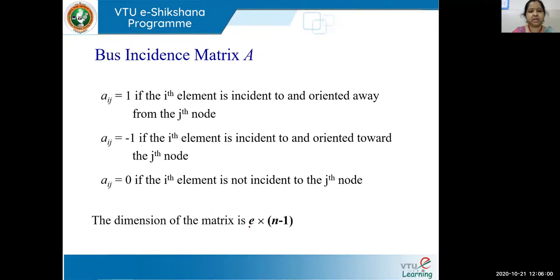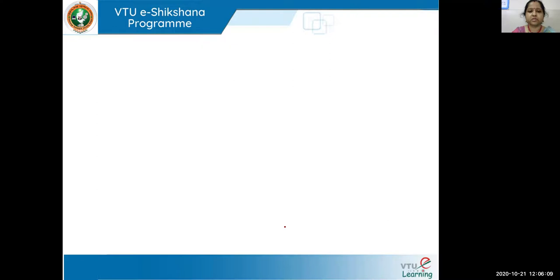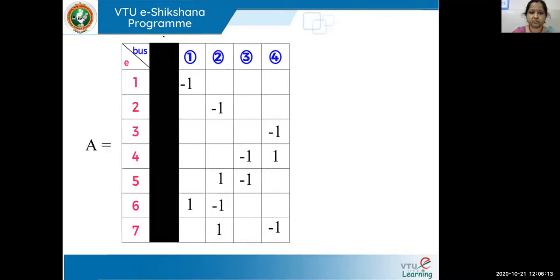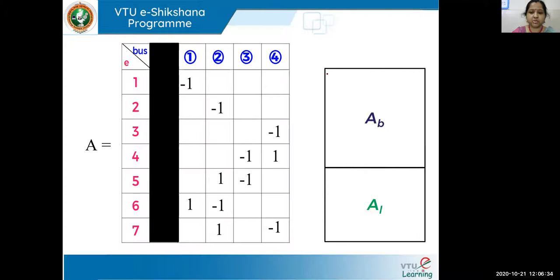Coming to the A matrix, the rule remains the same. If you know the A-cap matrix, whichever is your reference bus, that particular column is deleted and you get the bus incidence matrix. The size of this matrix will be E cross (N minus 1) because your buses equal nodes minus one. Since zero was the reference column, I've deleted that column and the rest is your A matrix. This matrix is rectangular and hence we call it a singular matrix, which is why we call the method 'formation of Y-bus by singular transformation.'